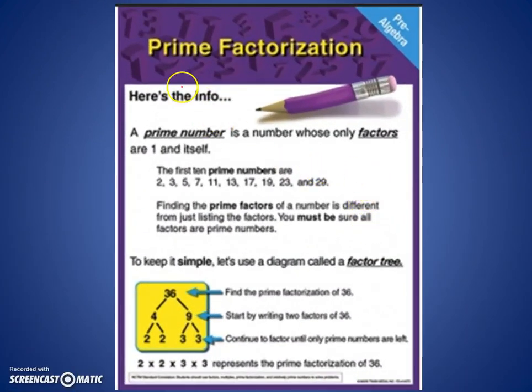Another useful math skill to be able to do to help simplify things is to use prime factorization. A prime number is any number whose only factors are one and itself. Here are a few examples of the first 10 prime numbers in the list of natural numbers: 2, 3, 5, 7, 11, 13, 17, 19, 23, and 29. Finding the prime factors of a number is different from just listing the factors. We've got to be sure that the factors are indeed prime numbers. I should point out in that list, notice that the first prime number was not 1. 1 is not listed as a prime number. The first one is 2.